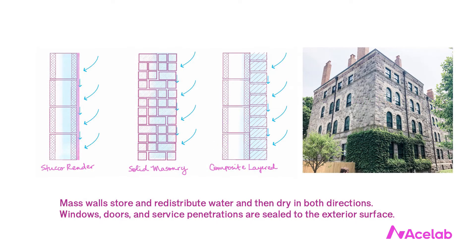The storage approach involves the wall absorbing water, redistributing that water, and then releasing it by drying. This is how mass walls manage water. The mass wall gets wet, it has an enormous capacity to store and redistribute that water, and then it dries in both directions. This works very well because mass walls are built out of materials that aren't moisture sensitive. These walls have a long history of performance.